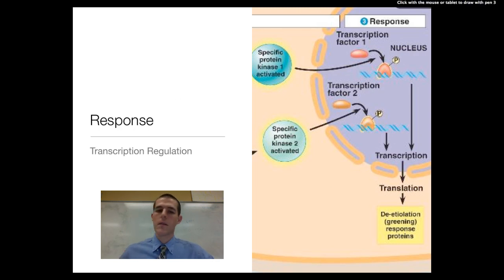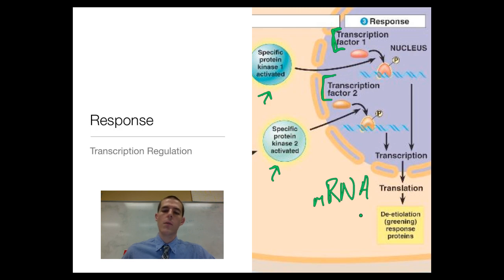All of these proteins that are being activated in the transduction phase are going to activate specific transcription factors. Each of these transcription factors is going to transcribe certain sections of DNA into mRNA, messenger RNA. That mRNA is then going to leave our cell and be transcribed into a specific protein, and the proteins that are specifically transcribed are going to play a role in de-etiolation. Just recognize that in this response phase, those proteins that were turned on are going to activate specific transcription factors. Each of those transcription factors is going to read and transcribe a specific gene within the nucleus of our cell.